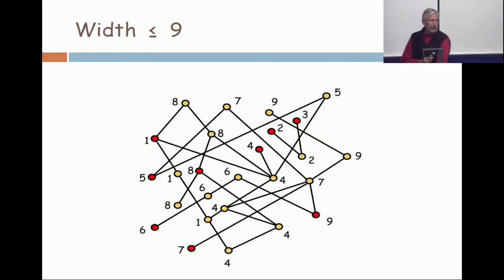Okay, now the color class which is somehow interesting here is color class nine. Look at the elements colored nine. Is it clear to you that those elements form a chain, a chain of size three?